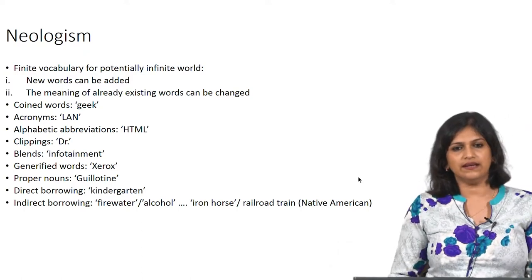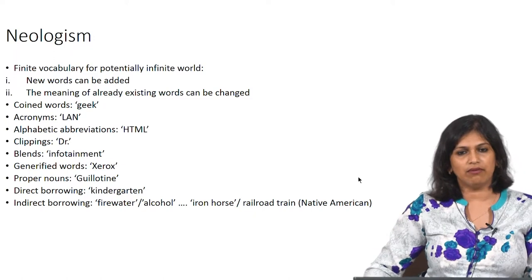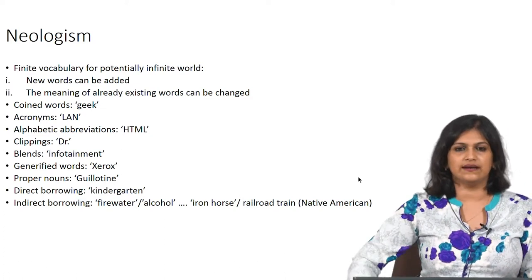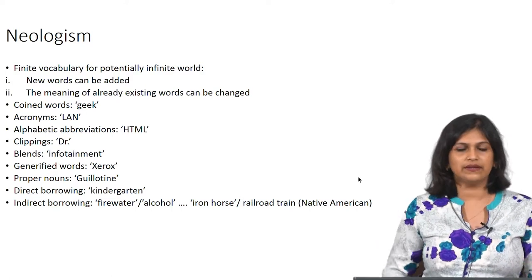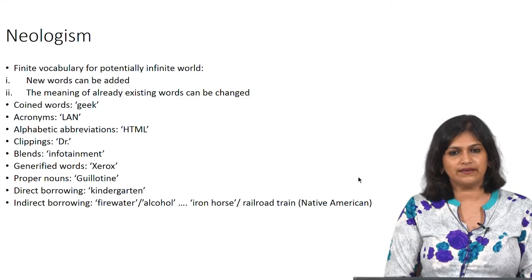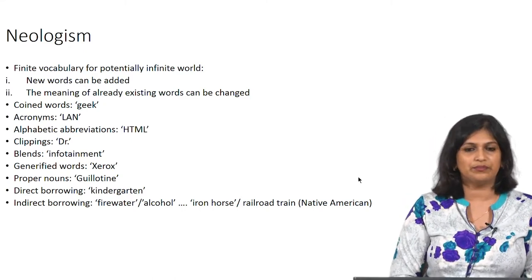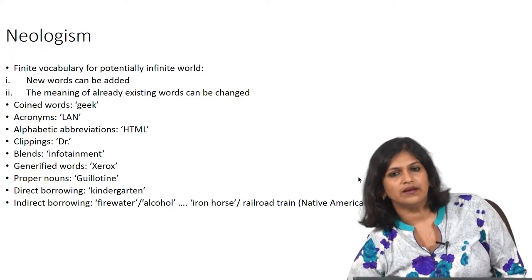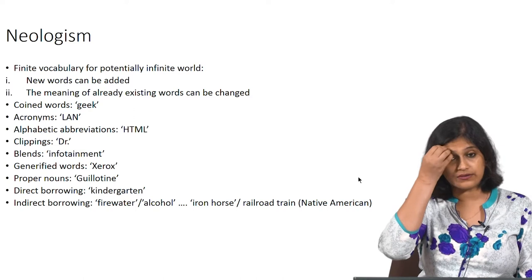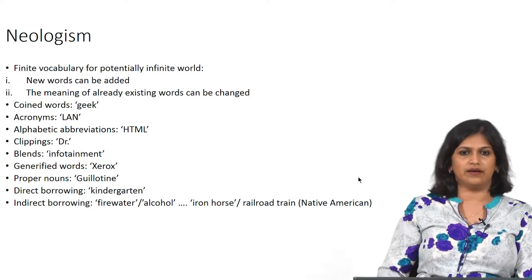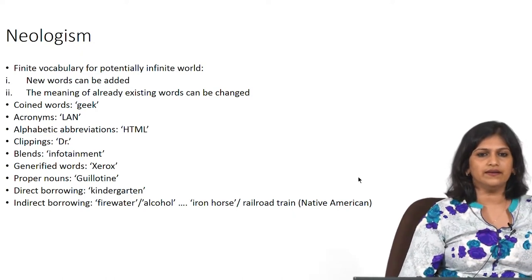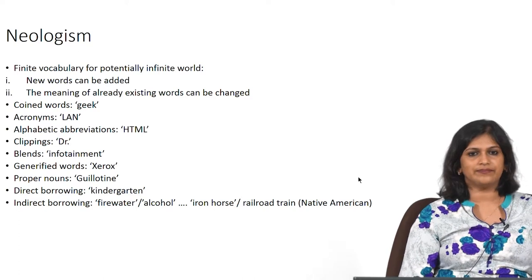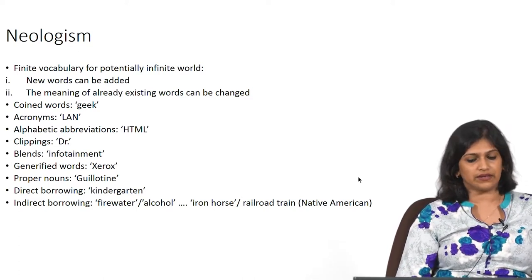Considering that languages are dynamic and interesting, we can also see a lot of borrowing from other languages. You can either borrow directly or indirectly. Direct borrowing is when you take a word from another language and use it as it is — for example, 'kindergarten,' which is a German word meaning something like a pre-primary or nursery school. The English borrowed it from German and used it exactly as they received it, so it gradually became part of the English lexicon. This is called direct borrowing.